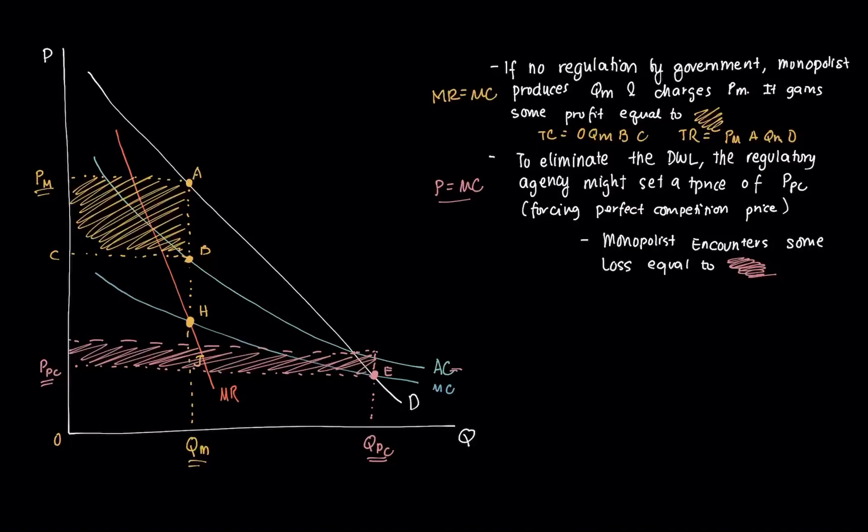It's not good for the monopolist to operate at this loss. Since no firm can operate indefinitely at a loss, this poses some dilemma for government. Either it must abandon this goal of marginal cost pricing, that is to price it in the same way as a perfectly competitive market, or the government must subsidize the monopoly forever in order for the price to be affordable.